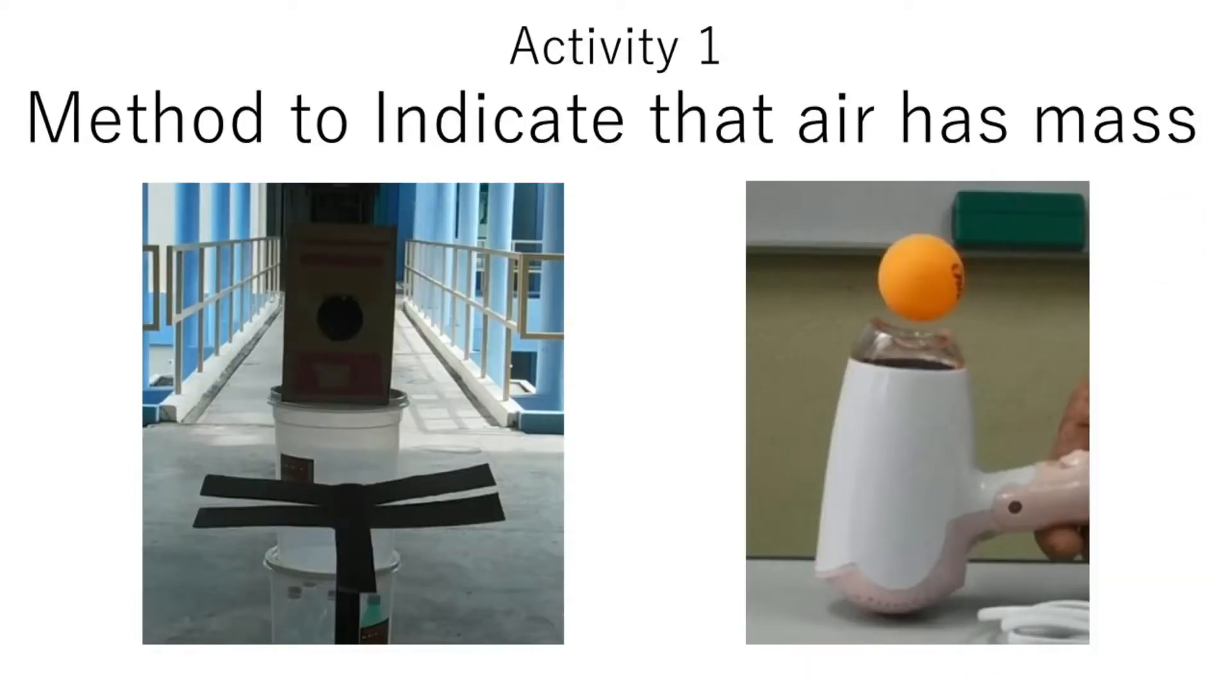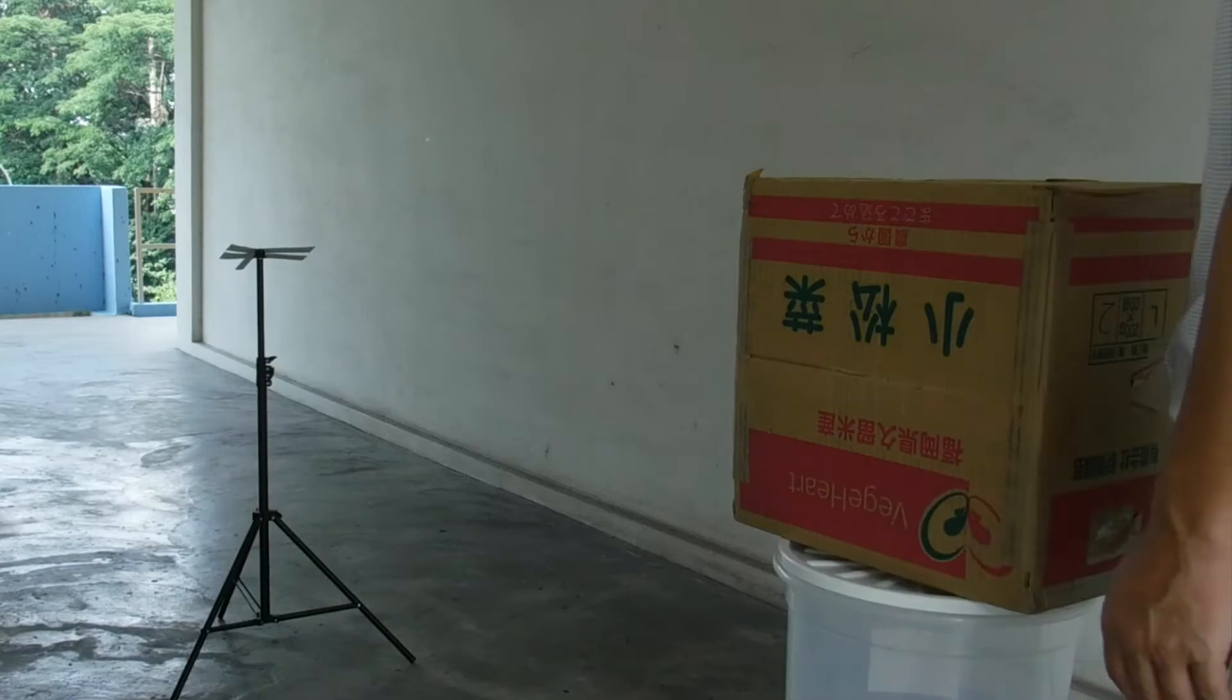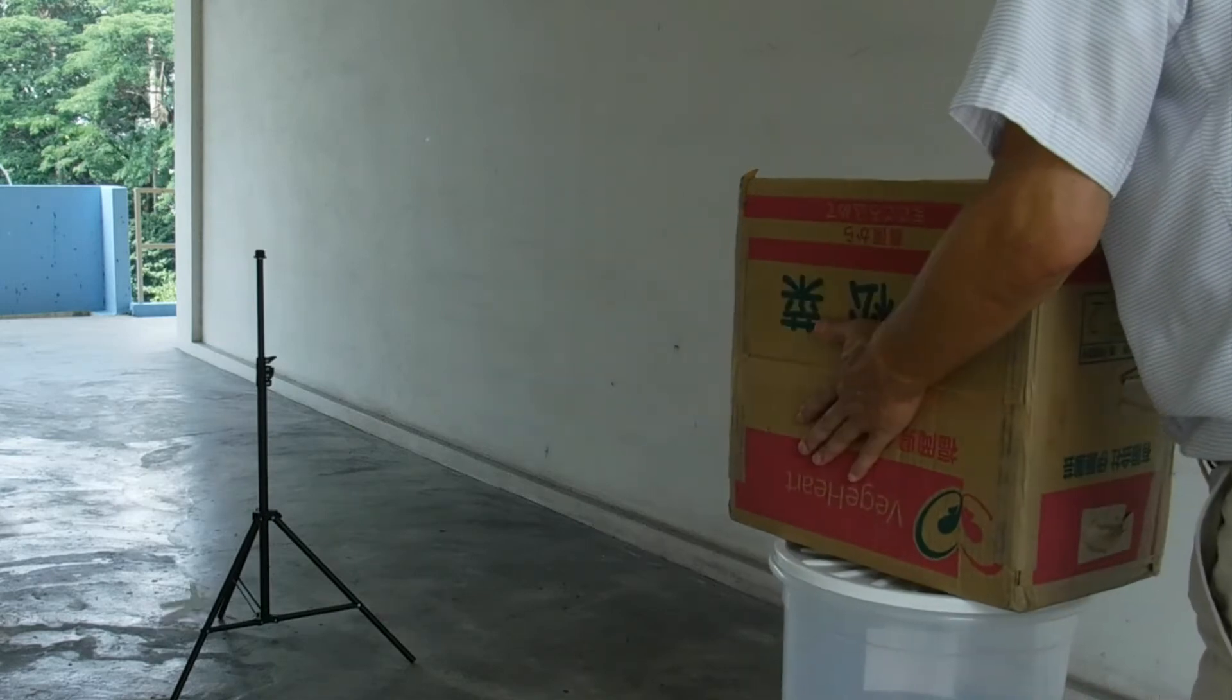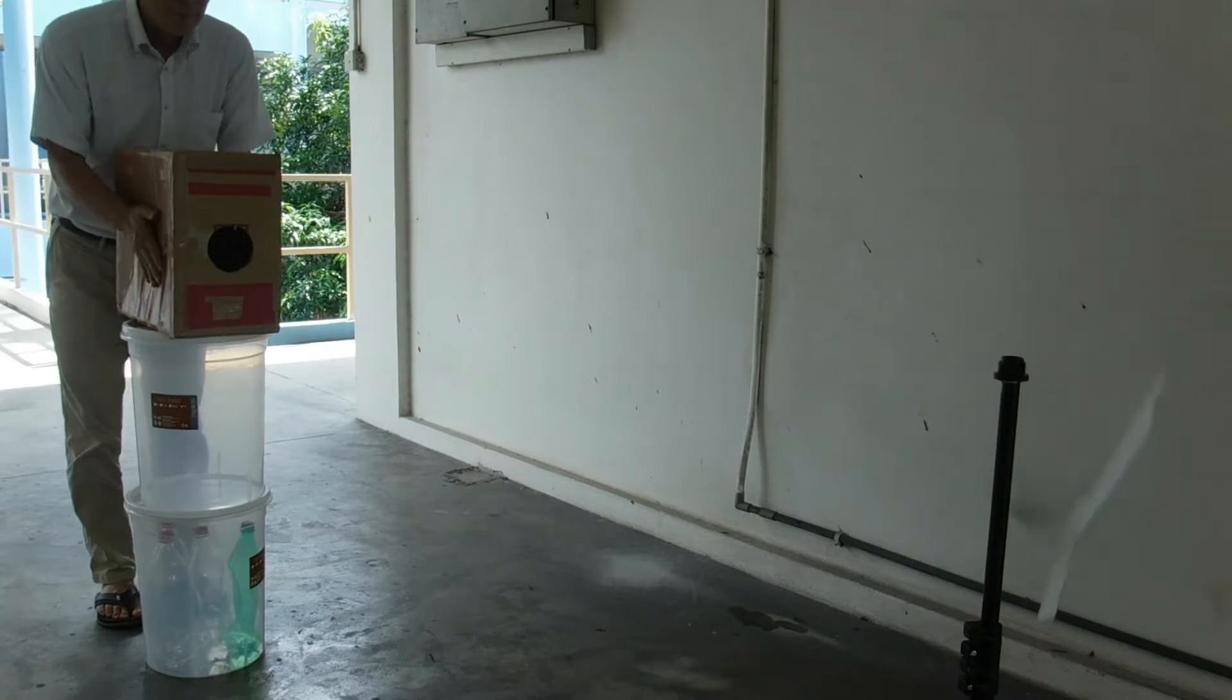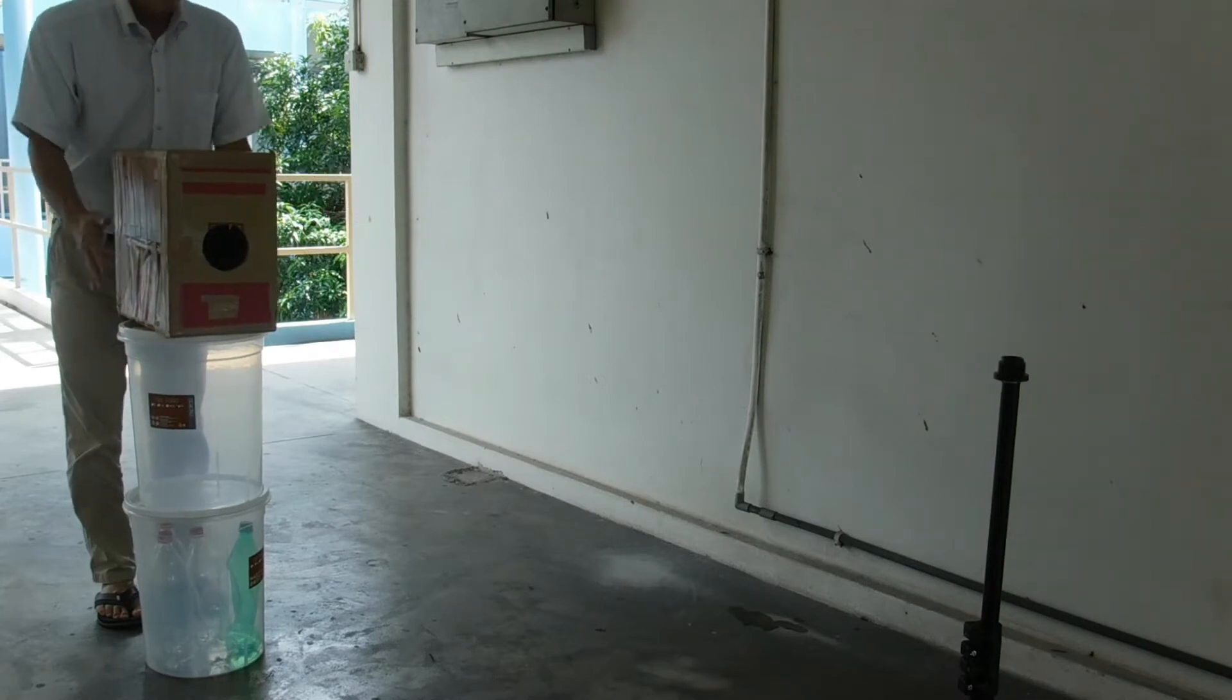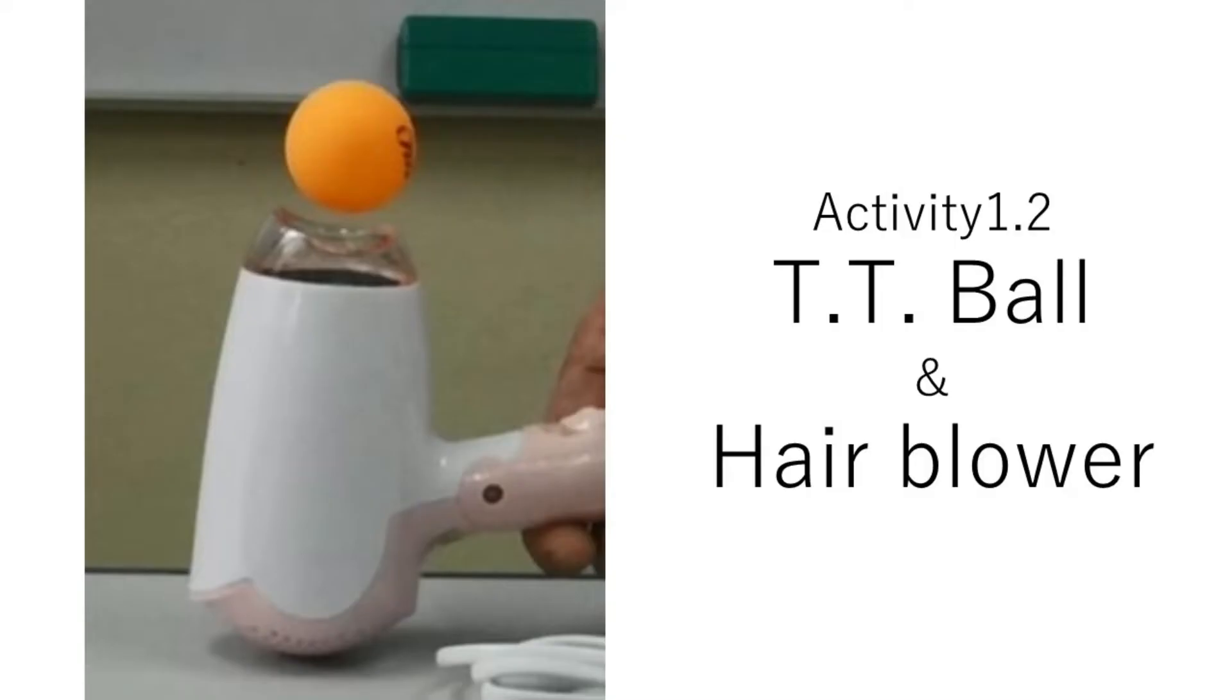At first, let's indicate that air has mass. This is an air cannon. Table tennis ball and blower.